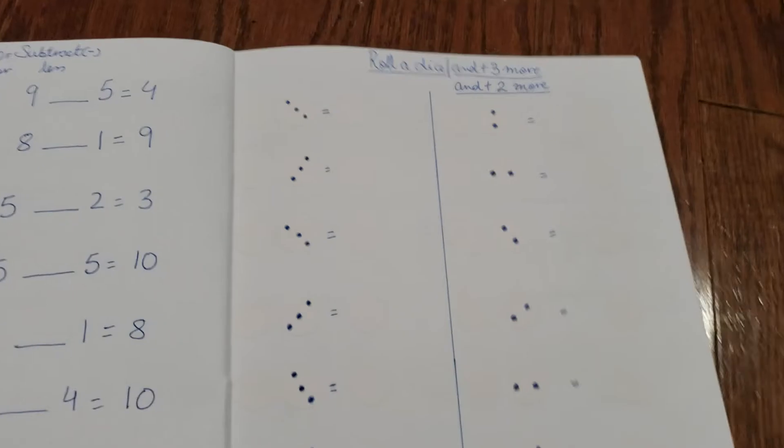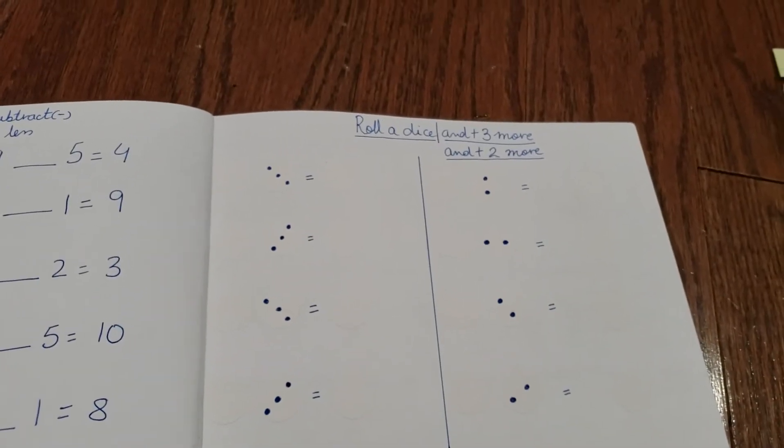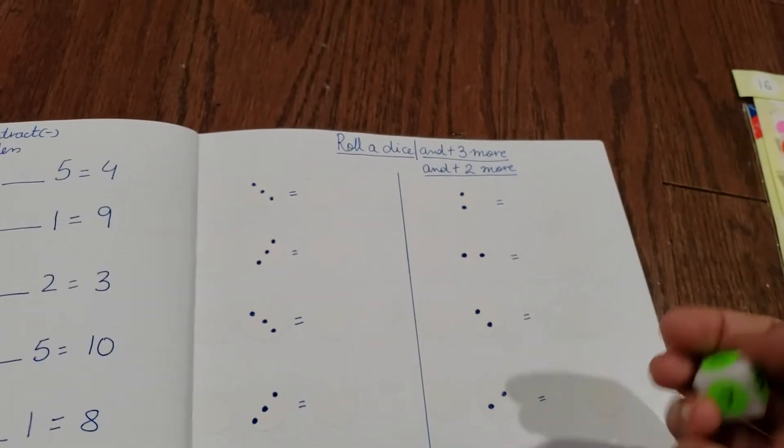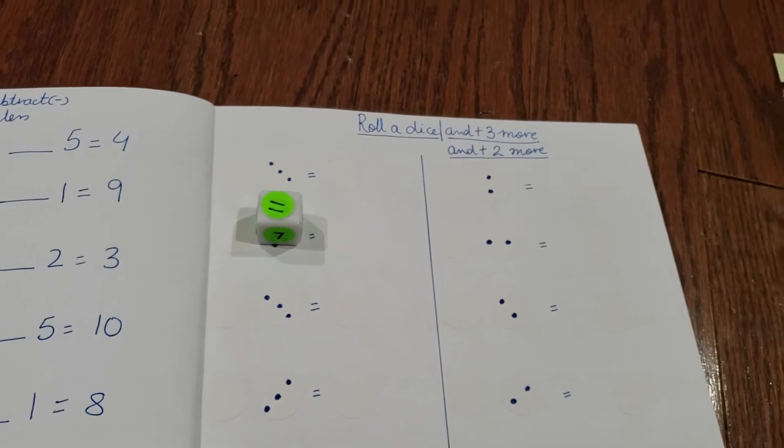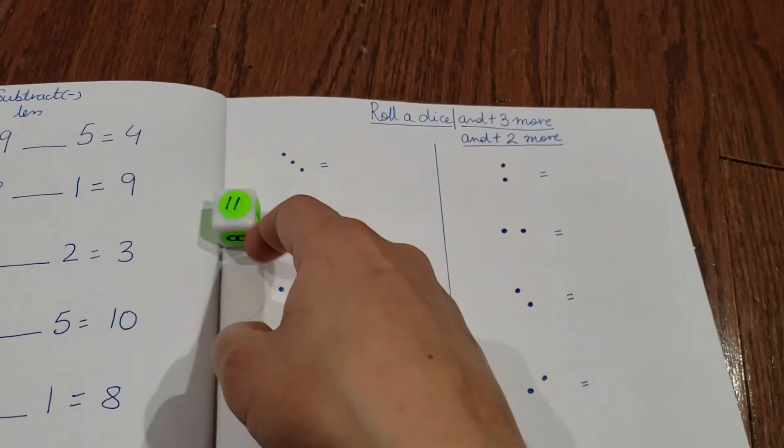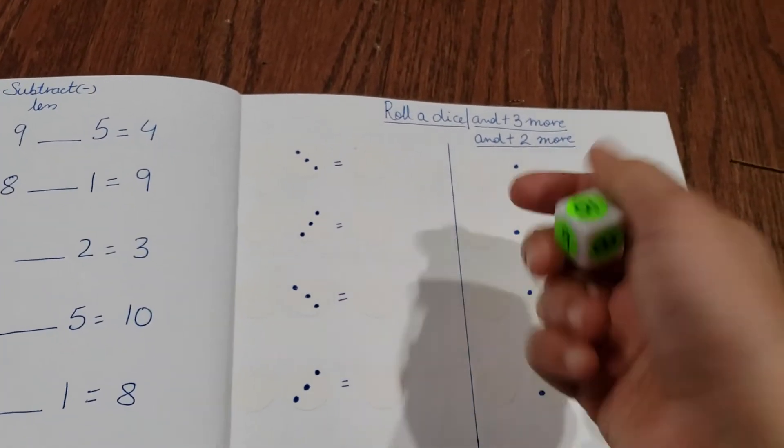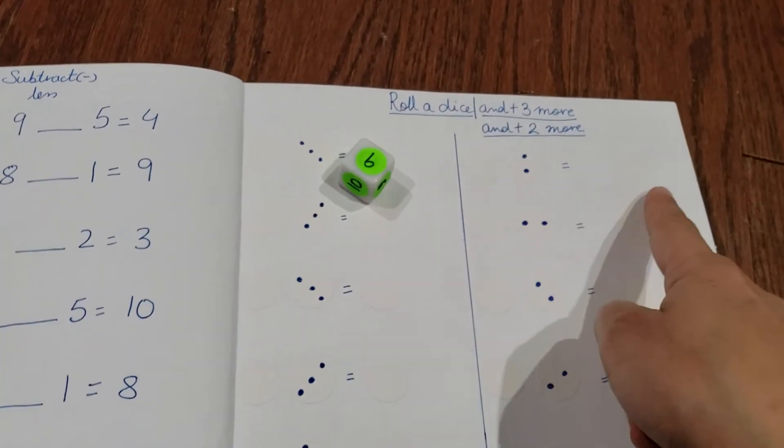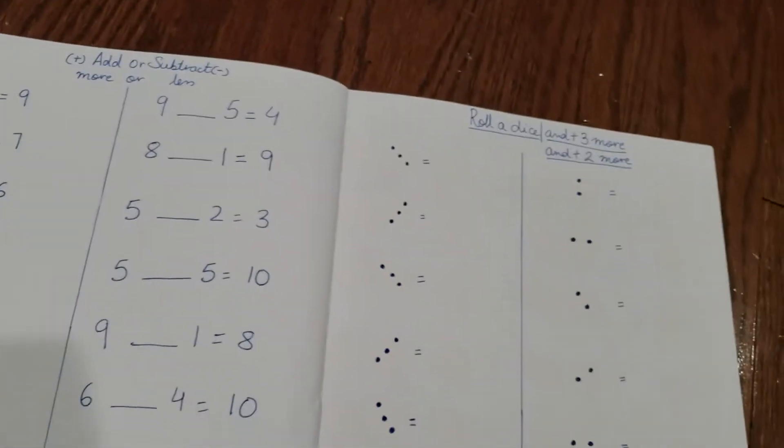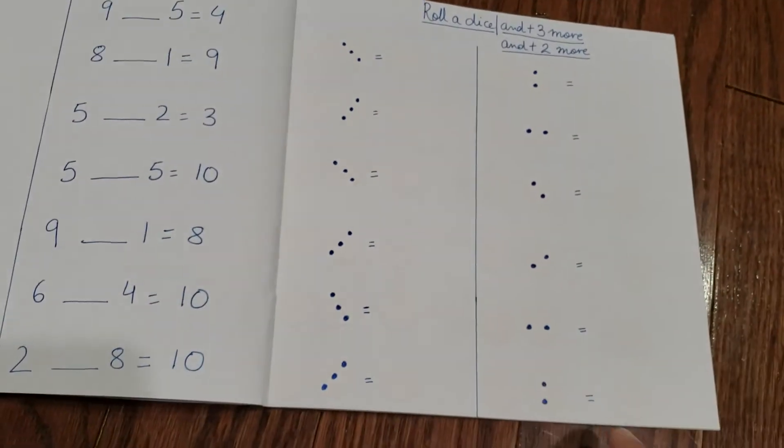It's roll a dice and add plus three or more. Either we'll use this dice or a simple dice. If it's 11, he needs to do 11 plus 3 equals what. If it's 9, then 9 plus 2 equals what. All this is like three, and all these are like two.